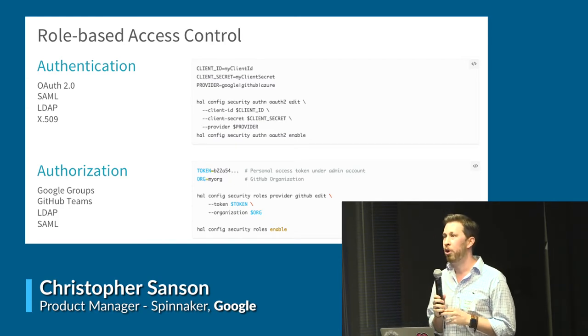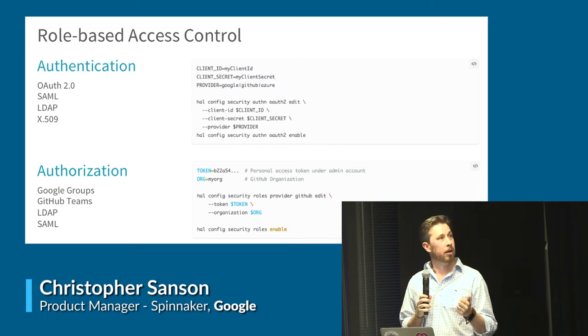Those are the big new things with 1.0: new docs, role-based access control, more cloud providers, Halyard CLI, and semantic versioning. I want to talk about open cloud - this is a real passion of mine. How often do you work on a project where Netflix, one of Amazon's biggest customers, Google, and Microsoft are all really big contributors? There's some really cool stuff happening with open cloud - Visual Studio Code, Kubernetes, Yarn, React.